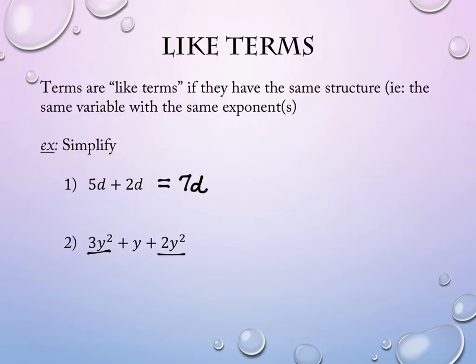I can combine the two that I've underlined. What is 3y squared plus 2y squared? 3y squared. Yes. And then the other piece, the y, is simply added on to the end: plus y.